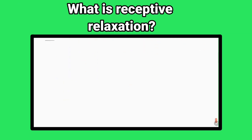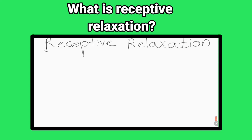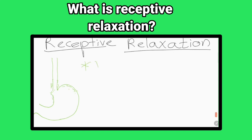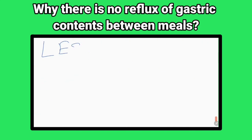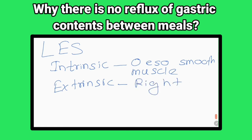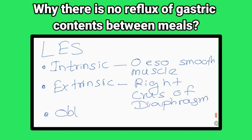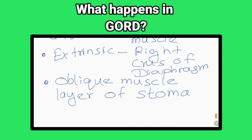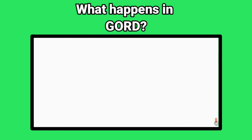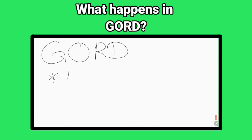What is receptive relaxation? Relaxation of the fundus and upper part of the body of the stomach to accommodate food, which is triggered by movements of the pharynx and esophagus, is a vagally mediated reflex. There is no reflux of gastric contents between meals because of the tonic activity of the lower esophageal sphincter.